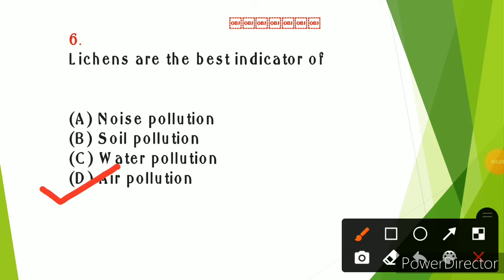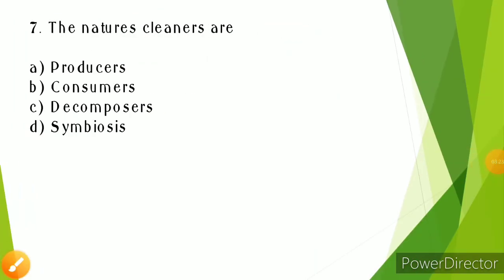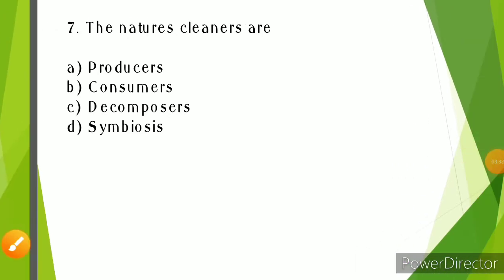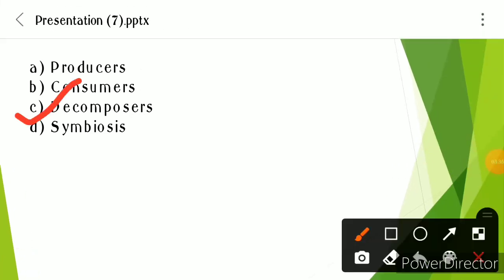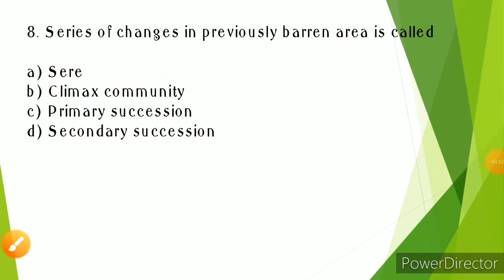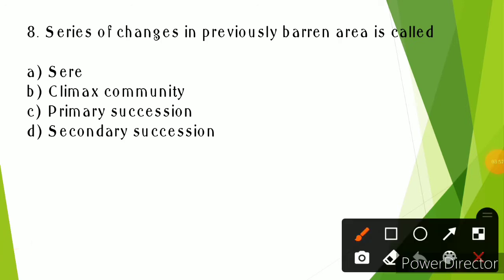The natural cleaners - they decompose organic matter and dead organisms and release energy back to the environment. A series of changes in a previously barren area is called primary succession. When the community is in soil, it's called lithosphere, or in water, it's called hydrosphere.